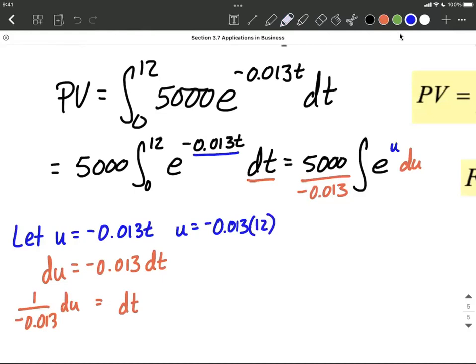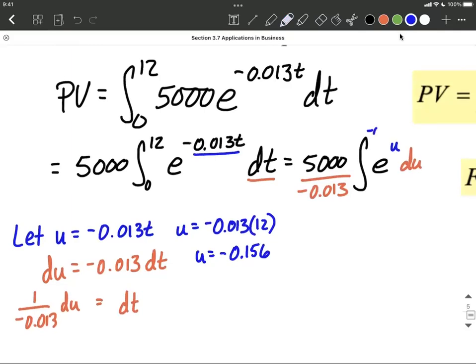and change it over to a u value of negative 0.156. Negative 0.156 will be our upper bound, and our lower bound still remains at 0. Because as I fill in to our let statement, 0 times anything works out to be 0.